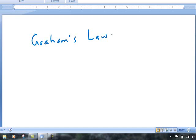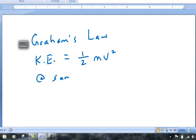As long as two gases are at the same temperature, they possess the exact same average amount of kinetic energy. The formula for kinetic energy is KE equals one half mv squared. As long as the gases are at the same temperature, their kinetic energies are going to be equal to one another.